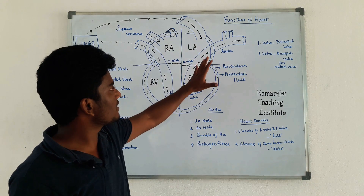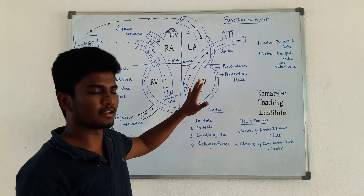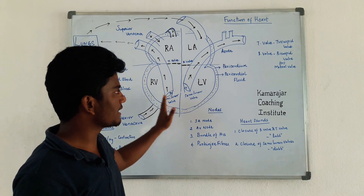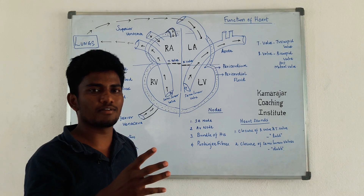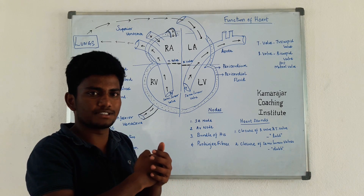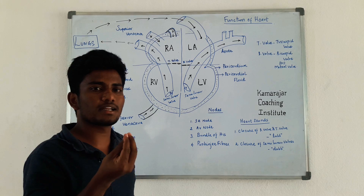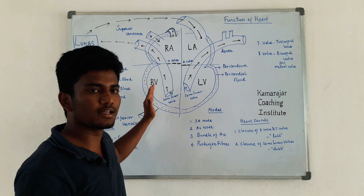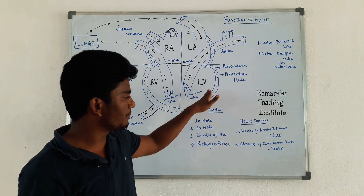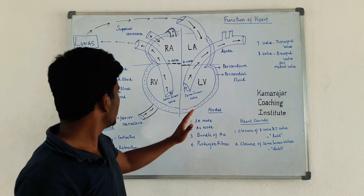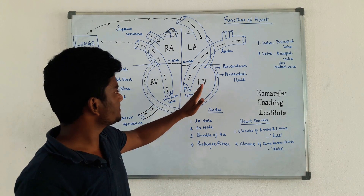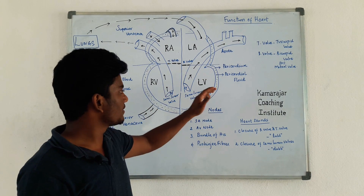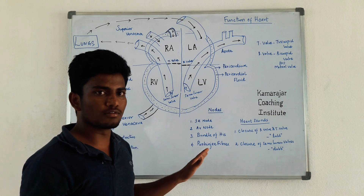The pericardium is a layer of the heart that provides protection from mechanical pressure and electrical shock. It has a pericardial fluid between its two membranes. This pericardial fluid protects the heart walls and provides a lubricating, protective function against mechanical pressure.